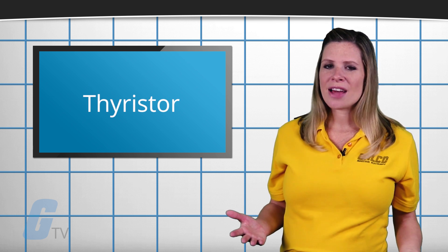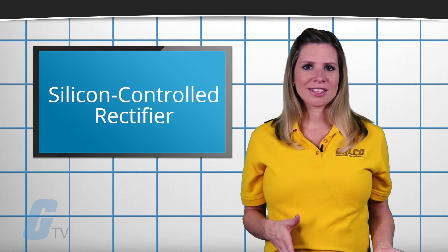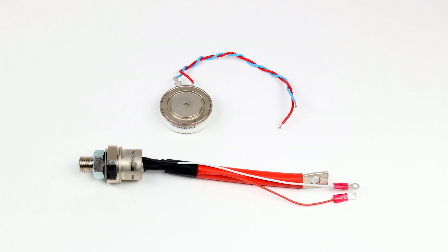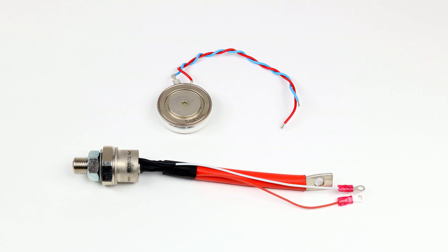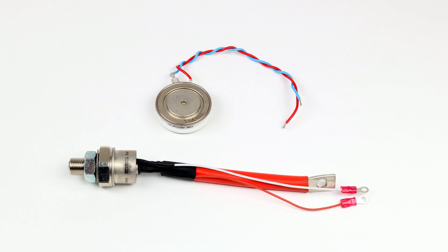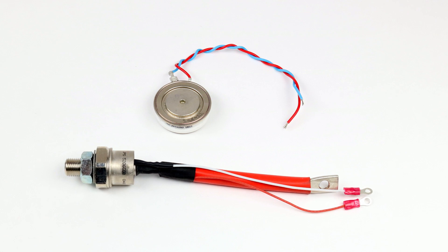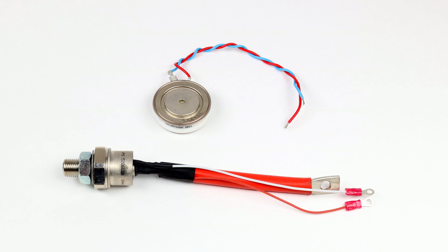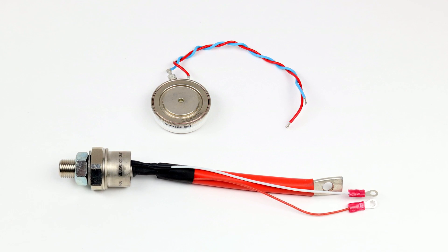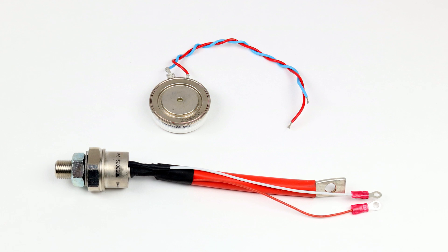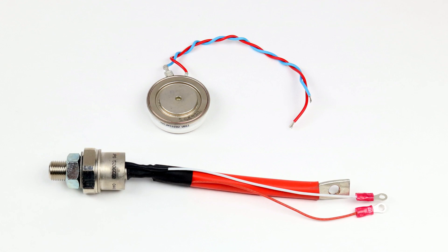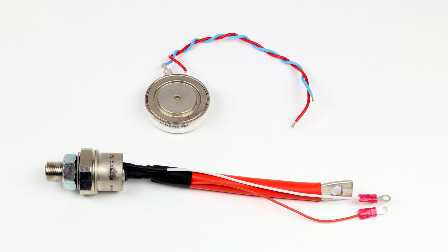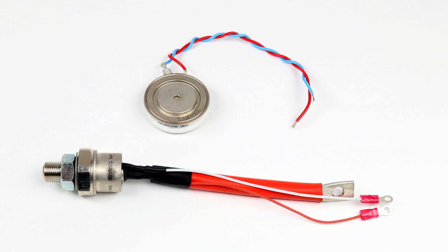The most common type of thyristor is the silicon controlled rectifier, or SCR. When the cathode is negatively charged relative to the anode, no current flows until a pulse is applied to the gate. The SCR begins to conduct and continues to conduct until the voltage between the cathode and the anode is reversed or reduced below a certain threshold value.